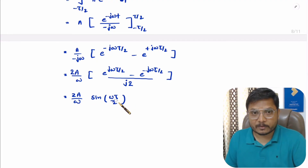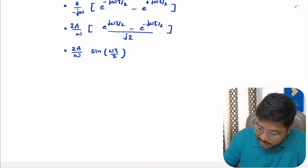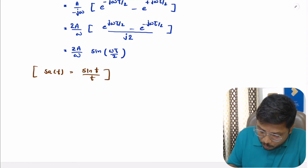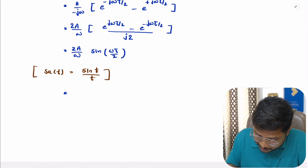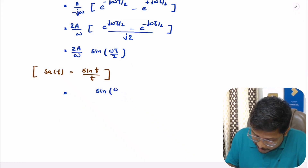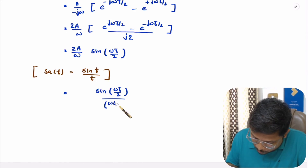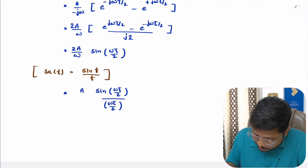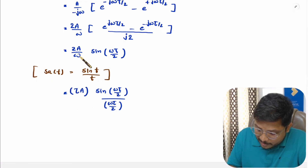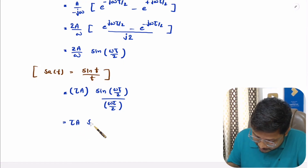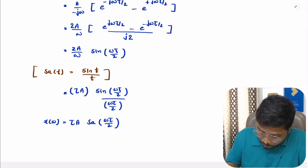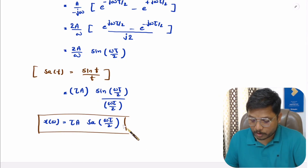Now we can represent the given function in sampling function form. The sampling function of t is defined as sinc(t) = sin(t)/t. So expressing the result as a sampling function, we get X(ω) for the rectangular pulse as Aτ into the sampling function of ωτ/2.